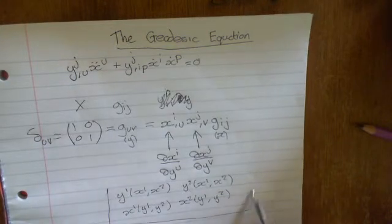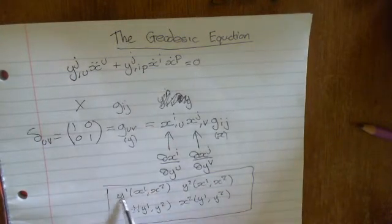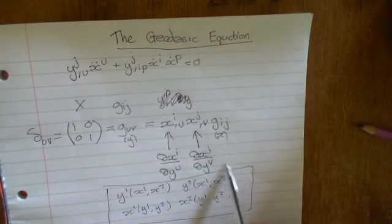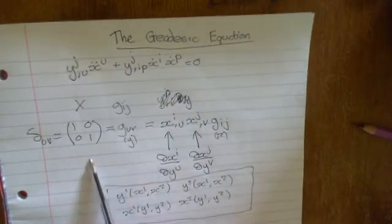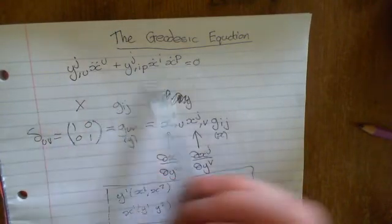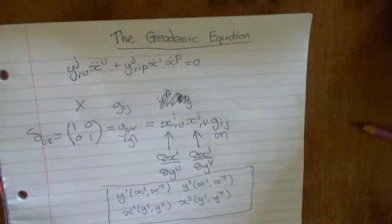If you know this, if you find this coordinate transformation with a Y coordinate system as a function of the X coordinate system, and when you do this, it transforms the metric into the Euclidean metric, then your space is flat.